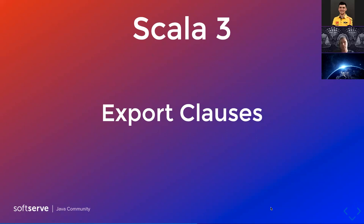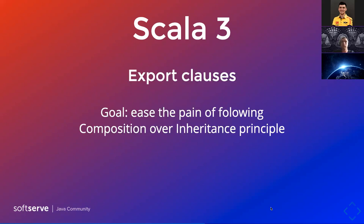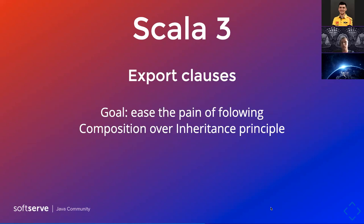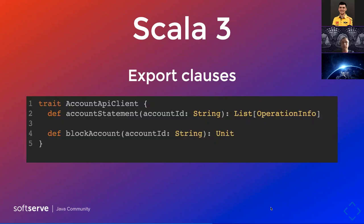Next feature: export clauses. I can't say it was a top-five most anticipated feature, but it's very interesting because it's a move towards OOP — it tackles some problems of object-oriented design. The goal of export clauses is to ease the pain of the composition-over-inheritance principle. I believe you're all familiar with this principle — to prefer composition over inheritance in many cases. But there are some caveats to using this principle; let's see what the flaws are.